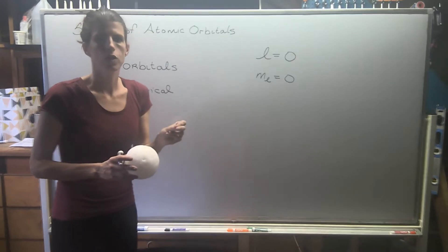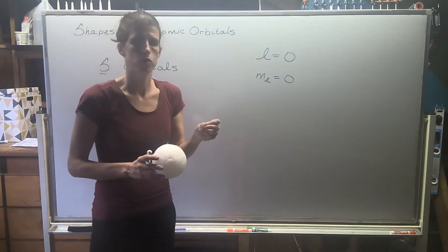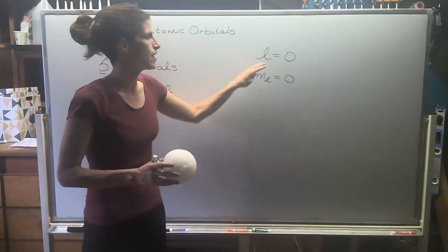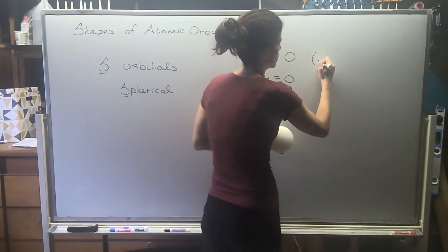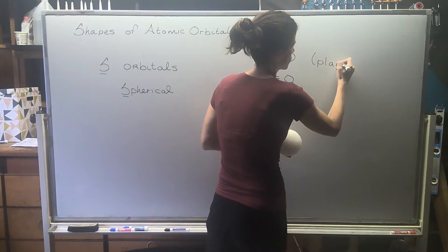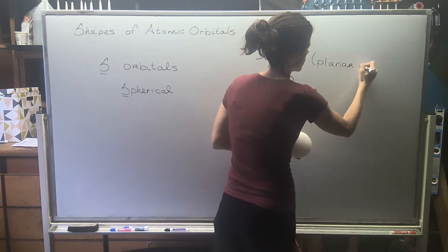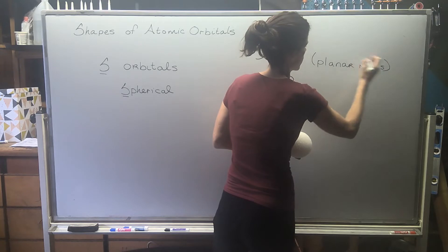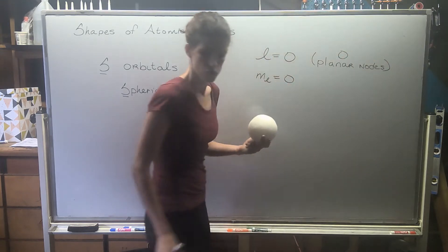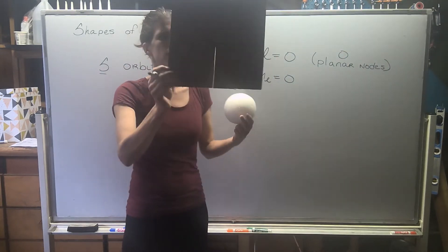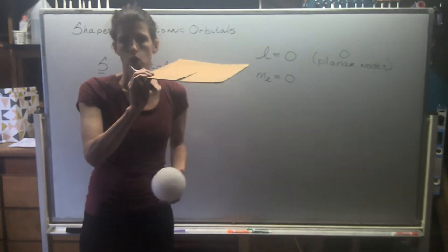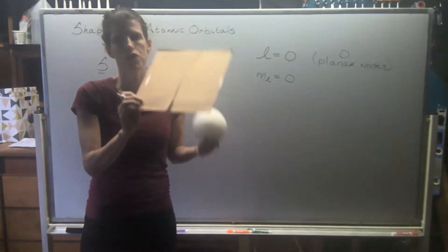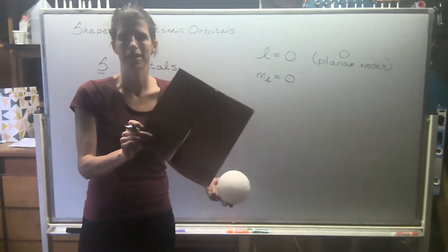What we're going to learn when we start talking about the p orbitals is that this value also corresponds to the number of planar nodes. So a planar node is like a big piece of cardboard, a big plane, where you have zero probability of finding an electron.